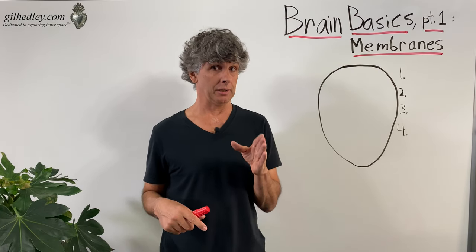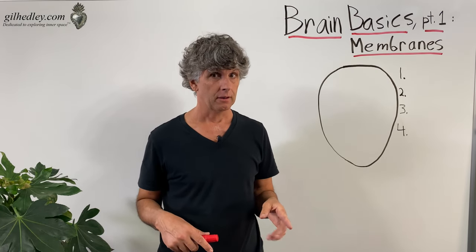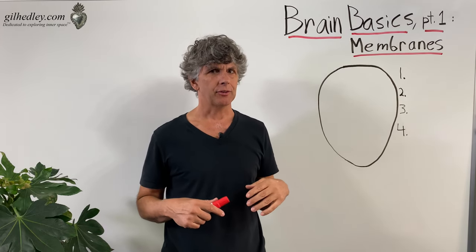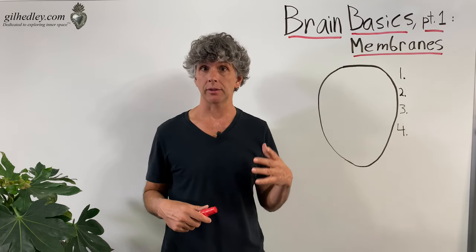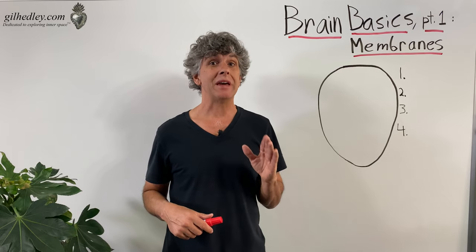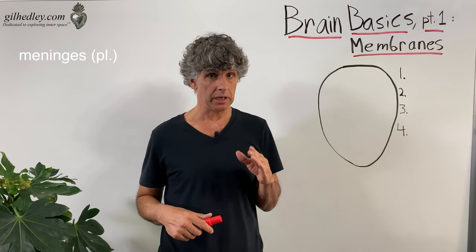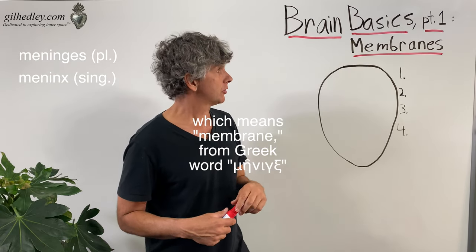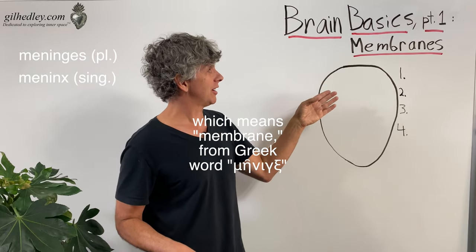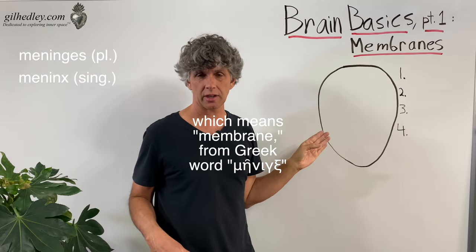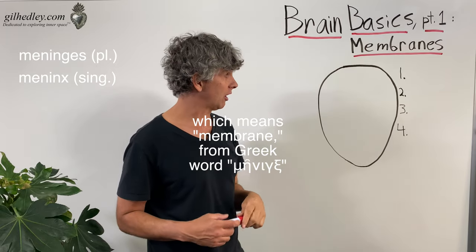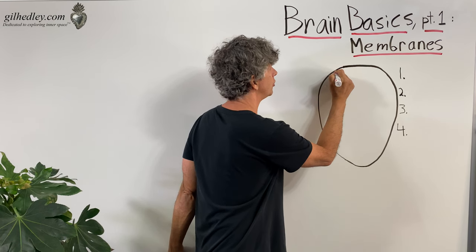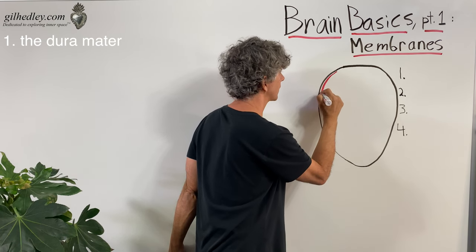Let's talk about some brain basics — lesson number one: membranes. There's a fancy word in anatomy for the membranes inside your skull: it's called the meninges. Meninges is plural for the word meninx, which means membrane. So the meninges are specifically the membranes inside your skull.